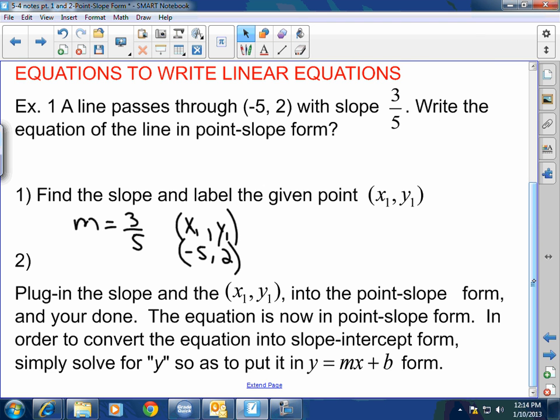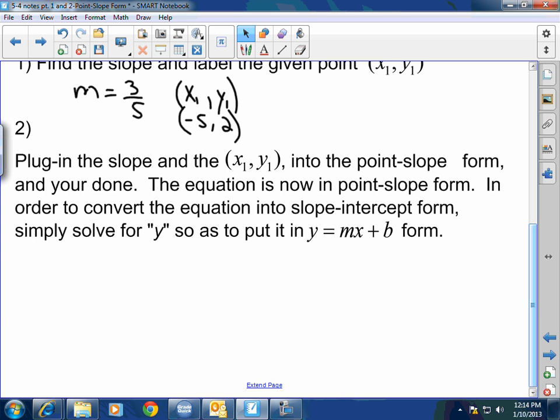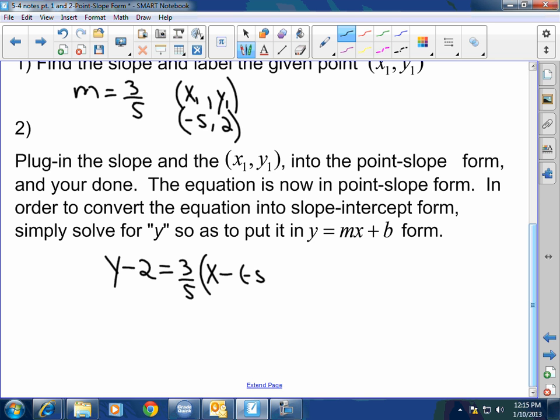Now in step 2, plug in, or in other words, evaluate the slope and the x₁, y₁ into the point-slope form. And you're done. So if I go y minus y₁, what's y₁ here? So y minus the value of y₁, so y minus 2, equals m. What's my m? 3/5 times x minus x₁. So what would it be? Not negative 5 guys, it's minus a negative 5. So what would that be? Plus 5. You guys got to remember your integer rules. You are done. That is your equation in point-slope form.